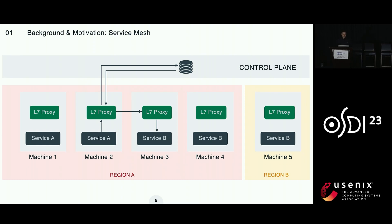With this approach, each service process has an L7 sidecar proxy running on the same machine, and its job is to route the request on behalf of the service. For example, when service A on machine 2 wants to communicate with service B, the proxy of machine 2 will first discover service B instances on machines 3, 4, and 5, and then make a decision on how to load balance the request across those machines.